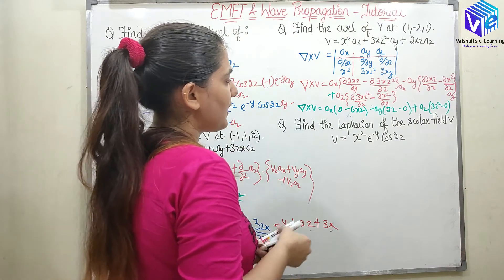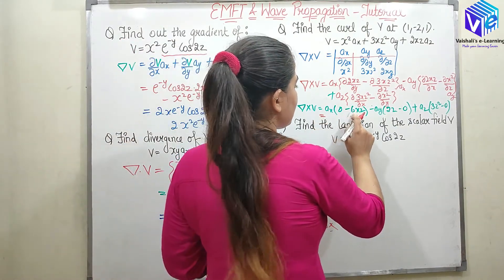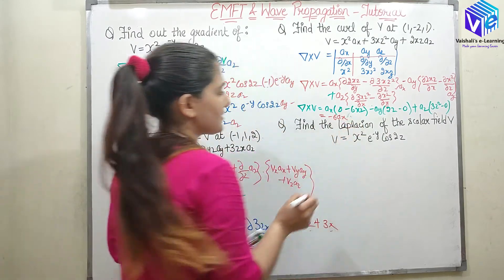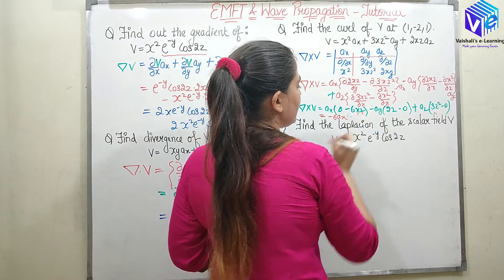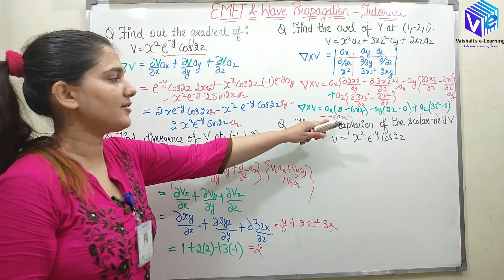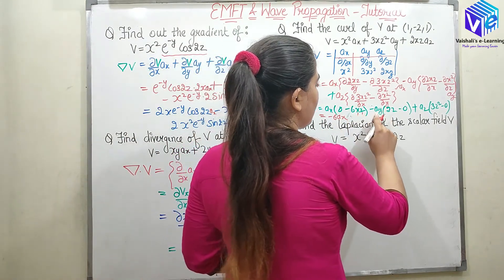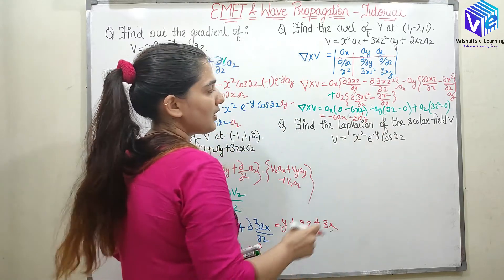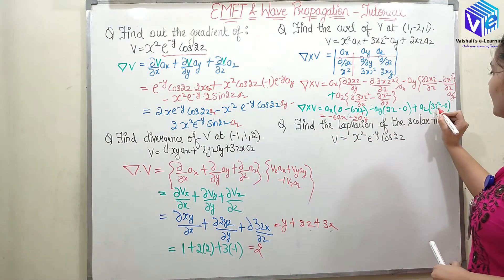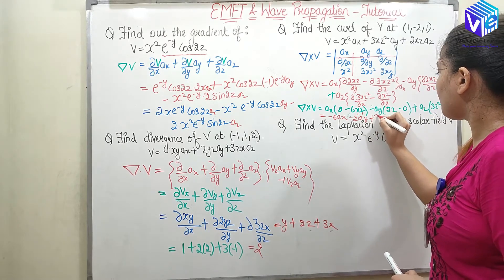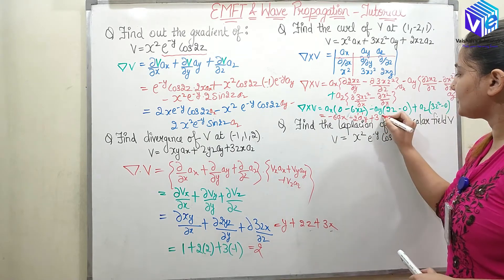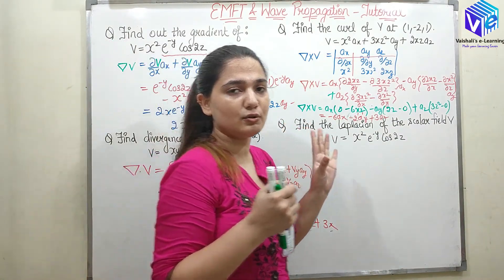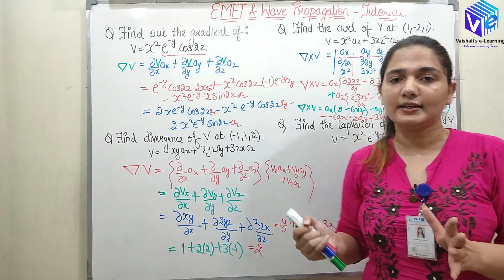Now putting the values x=1, y=-2, z=1: the ax term gives -6(1)(1) = -6ax; the ay term gives -2(1) = -2ay; and the az term gives 3(1)² = 3az. So del cross V = -6ax - 2ay + 3az. The output of the curl is a vector quantity.